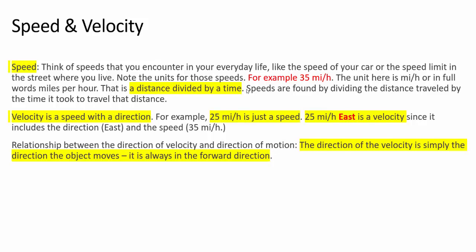So speeds are found by just dividing the distance traveled by the time it took to travel that distance. And it is just a number, a speed, like 35 miles per hour. A higher number would mean higher speed. A lower number would mean a lower speed.